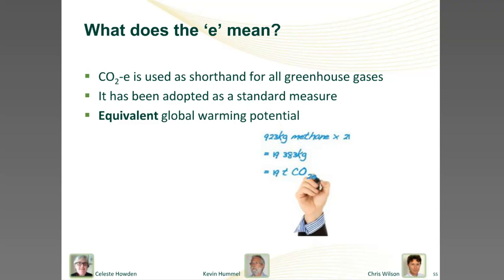Note that the graphic on screen shows a GWP of 21 for methane. This was taken from the second assessment report of the Intergovernmental Panel on Climate Change, while 25 is taken from the fourth assessment report. These factors are periodically updated, so if you're doing accurate work, make sure you've got the right factors.